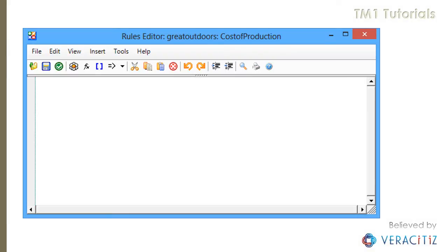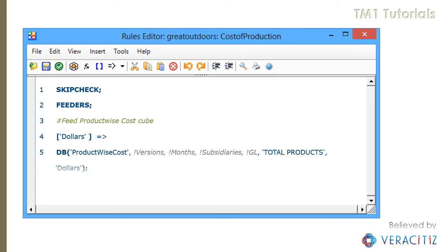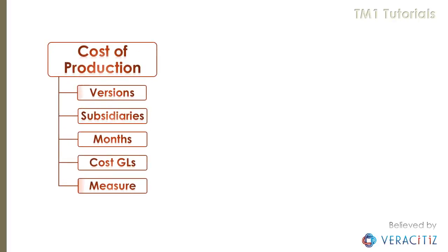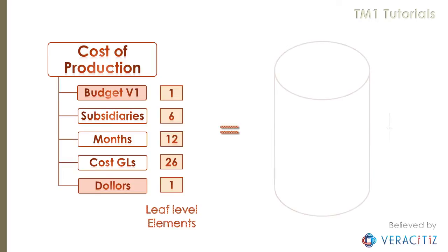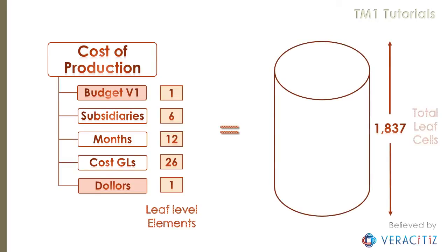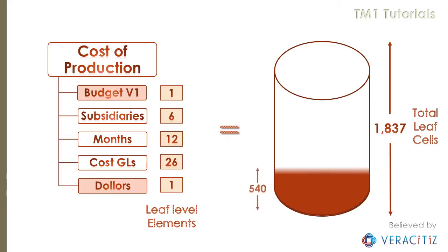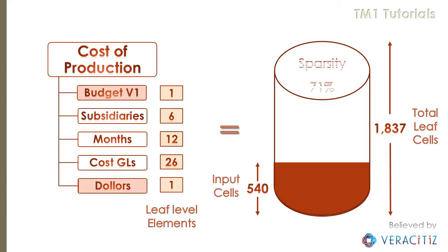As per Method 2, the feeder has to be written in the cost of production cube. Now let's get a little visibility on the back-end mechanism. Each version layer of the cost of production cube has approximately 1,800 leaf-level cells, out of which only 540 cells have data, which means the cube is 71% sparse.